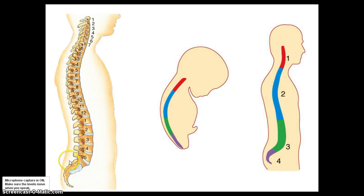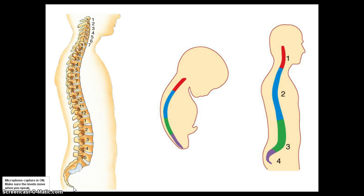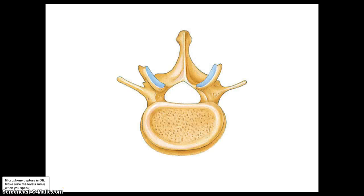Just inferior to the lumbar vertebrae is the sacrum, which forms part of our pelvis. And at the very bottom, the most inferior bone in the vertebral column, is the coccyx — your tailbone.